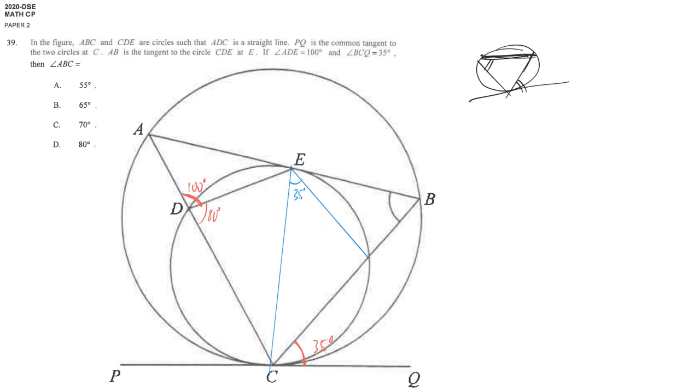At the same time, don't forget that there is a cyclic quadrilateral. Opposite angles are supplementary, so this is 80, which means this is 100. Or you may directly use exterior angle of cyclic quadrilateral—we get this angle is 100 degrees.